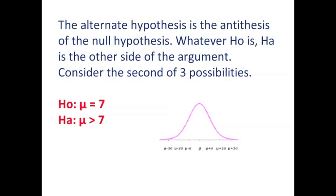As I stated, the alternative hypothesis is the antithesis of the null hypothesis. Whatever H-O is, H-A is the other side of the argument. Now, we just looked at the null hypothesis mu equals 7, and the alternate hypothesis mu is not equal to 7.